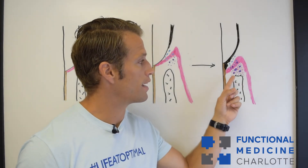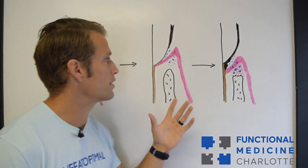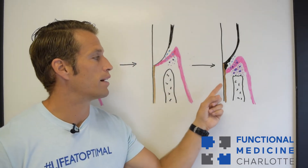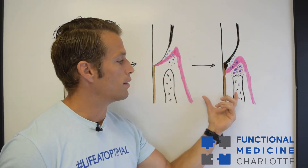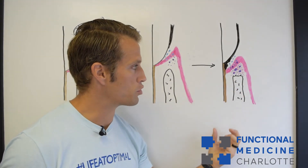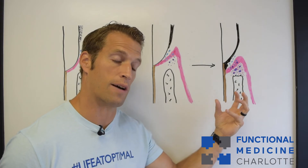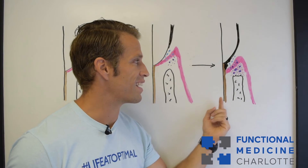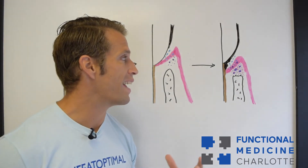Notice that in periodontitis, as it progresses, you have bone loss as well. Previously, gingivitis was mostly an issue at the gum line, but now as periodontitis develops, we're losing bone. The bony structure holding the tooth in place starts to get resorbed. We have recruitment of macrophages or osteoclasts — the immune cells that break down bone. As the inflammation and oral dysbiosis progress and biofilms get thicker, bad things happen to the teeth and systemically.